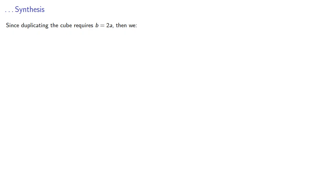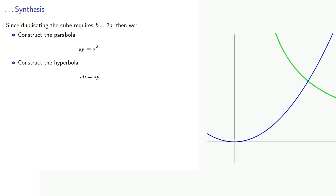Since duplicating the cube requires b equal to 2a, then we construct the parabola ay equals x squared, and then construct the hyperbola ab equals xy, or using b equals 2a, 2a squared equals xy. And their intersection gives us the values of x and y.